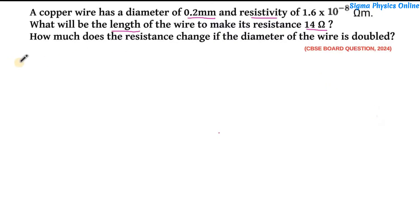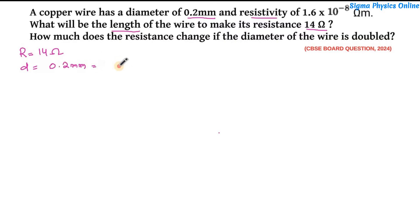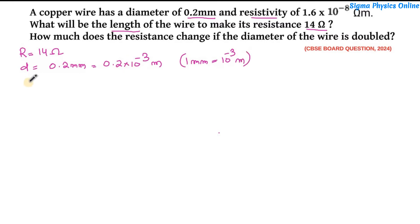Alright, so first let's write down what all are given. The resistance of the wire is given as 14 ohm. The diameter of the wire is given as 0.2 millimeter, which is 0.2 × 10⁻³ meter because 1 millimeter is 10⁻³ meter. Then we have the resistivity given as 1.6 × 10⁻⁸ ohm meter.